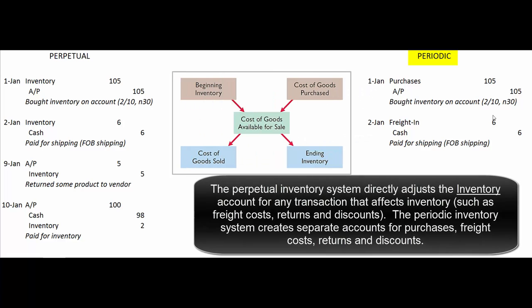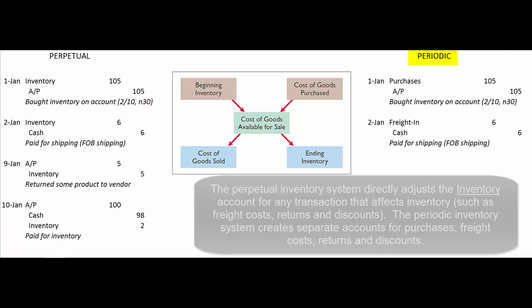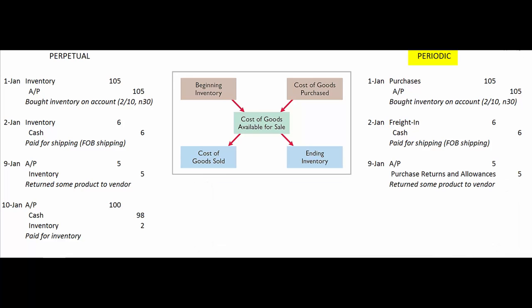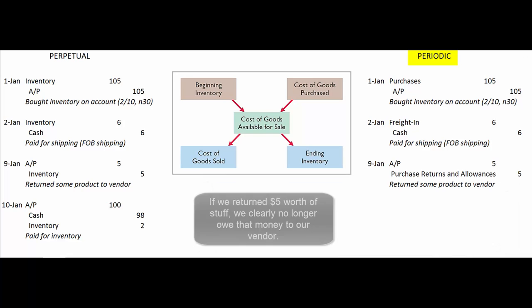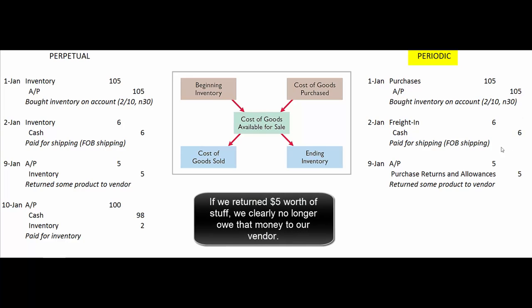Because the periodic inventory system doesn't blend everything into the inventory account — instead it sets up different accounts for purchases, freight costs, returns, and discounts. Then we return $5 worth of stuff. We reduce our accounts payable just like before, but instead of crediting inventory, we credit a separate account called purchase returns and allowances.